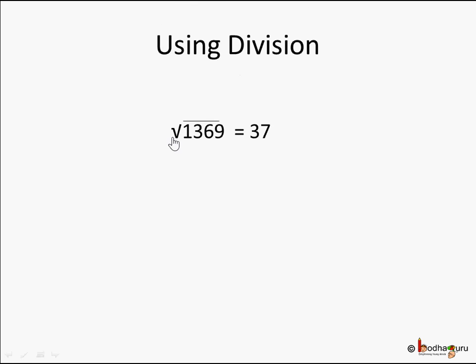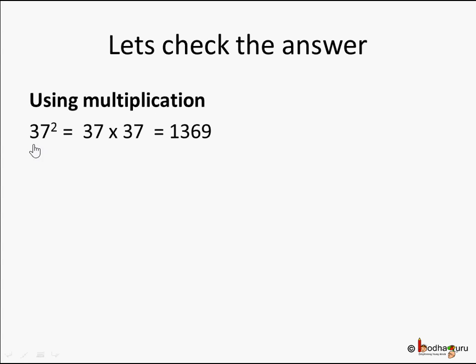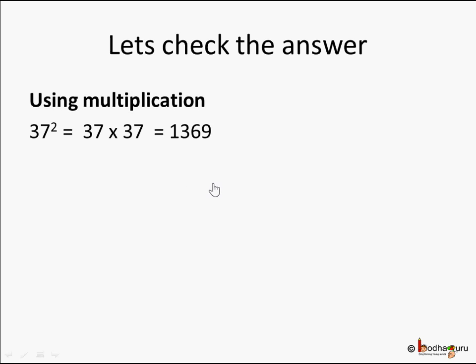We subtract 469 minus 469 to get a remainder of 0, which means we have found the square root. The square root of 1369 is 37. We can cross-check by doing 37 squared using normal multiplication — 37 times 37 gives 1369, confirming the answer is correct.